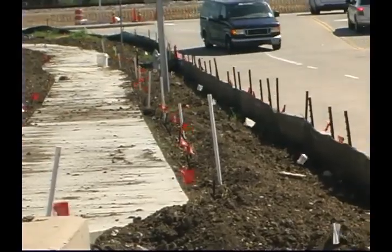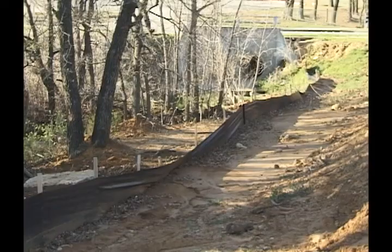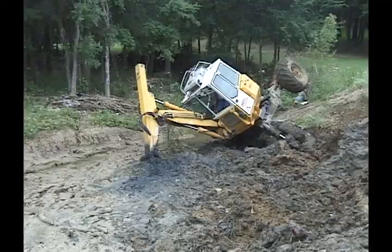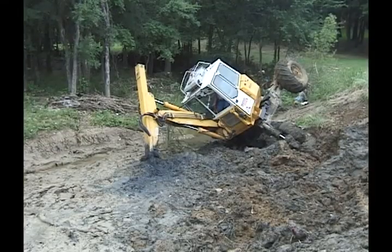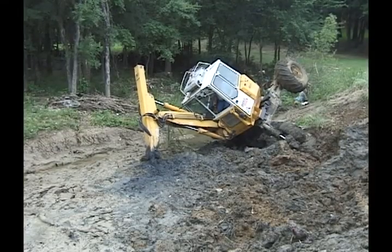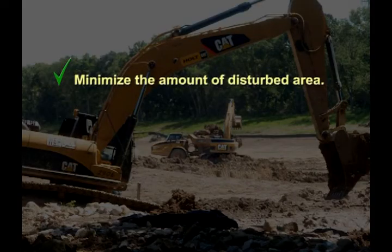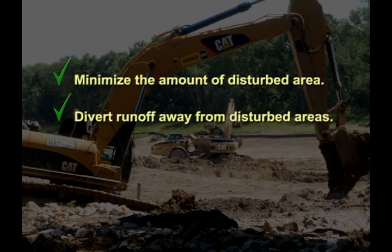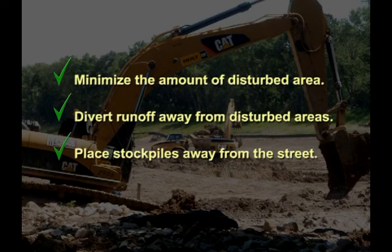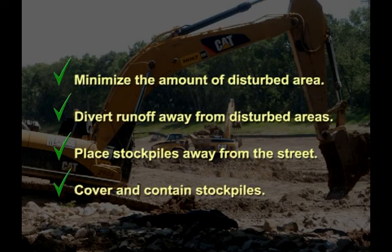Preventing soil erosion is more effective than trying to remove sediment from runoff. Some good ways to prevent soil erosion are to minimize the amount of disturbed area, divert runoff or flow water away from disturbed areas, and place dirt stockpiles out of the street and away from runoff or flowing water. Cover stockpiles with plastic or provide a barrier such as a silt fence around the pile to keep the materials contained.